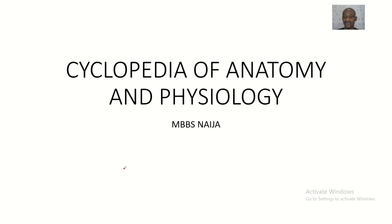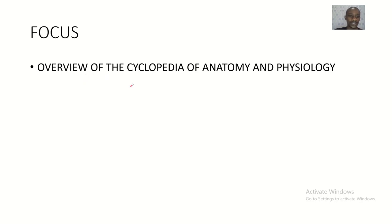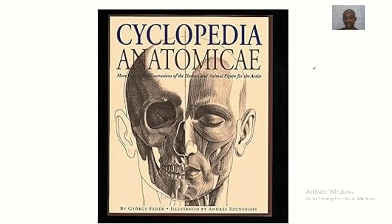I should be having an overview of one of the greatest textbooks in anatomy — the Cyclopedia of Anatomy and Physiology. The books we use nowadays have roots from previous books, and that's exactly what we are going to talk about in this lecture: an overview of the Cyclopedia of Anatomy and Physiology.